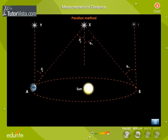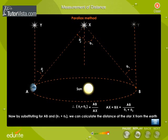We know from geometry that the angle subtended is equal to the arc divided by radius. Therefore, theta 1 + theta 2 = AB/AX. AX = BX = AB/(theta 1 + theta 2). Where AX is the distance of the star from Earth and AB is the orbital diameter of the Earth. Now by substituting for AB and theta 1 plus theta 2, we can calculate the distance of the star X from the Earth.